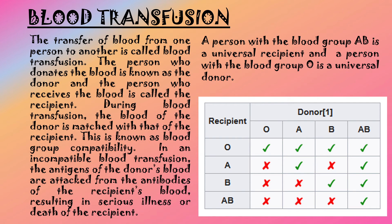Blood transfusion: the transfer of blood from one person to another is called blood transfusion. The person who donates blood is the donor, and the person who receives blood is the recipient. During blood transfusion, the blood of the donor is matched with that of the recipient — this is blood group compatibility. In an incompatible blood transfusion, the antigens of the donor's blood are attacked by the antibodies of the recipient's blood, resulting in serious illness or death. A person with blood group AB is a universal recipient, and a person with blood group O is a universal donor.